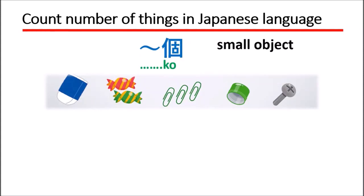Small objects, as you see in the picture - eraser, candy, and many more things. You can see they use the counter, the kanji of ko (個). You just put the number in front of the kanji ko. So let's look at some examples.